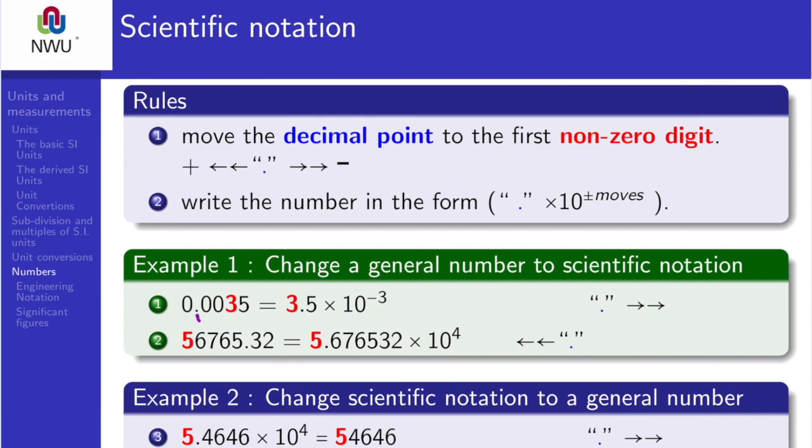In example 1, we've got 0.0035 which we've got to write in the scientific notation. Therefore, we move the decimal point to between 3 and 5 and in doing so, we take 3 leaps to the right, hence the power of 10 becomes minus 3.